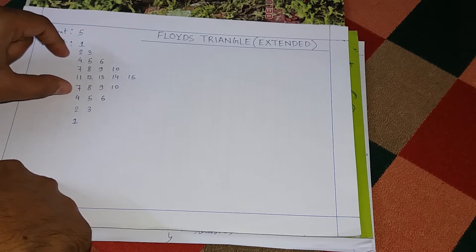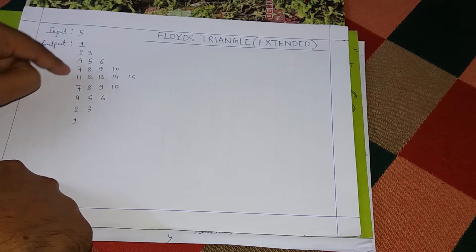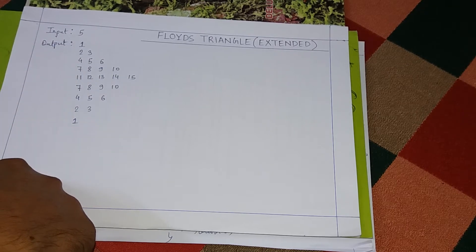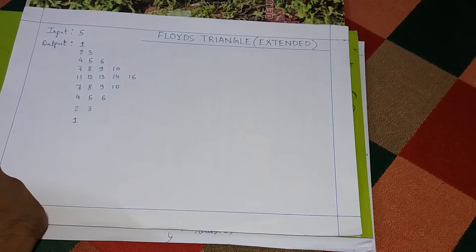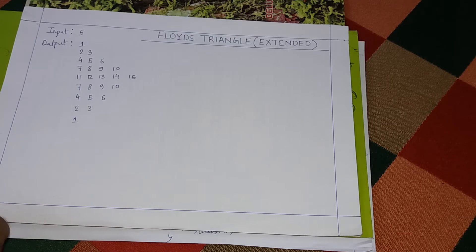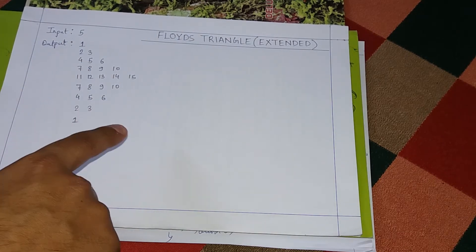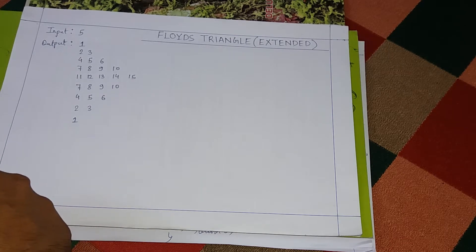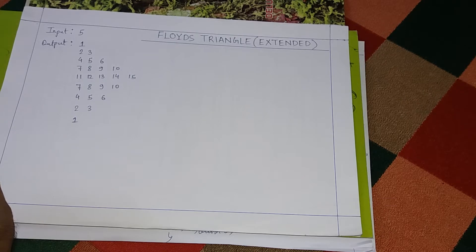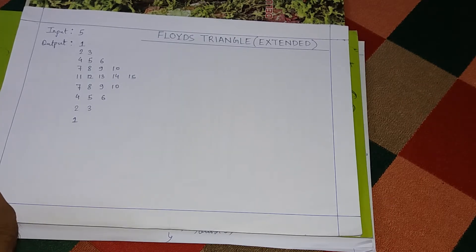Each line below the mirror will be a replica of the corresponding line above it. Before starting the solution, I would like you to pause this video for two minutes and try this question on your own, because if you can figure out the logic of this question you can easily solve other related questions. Try it out and let us now discuss the solution.